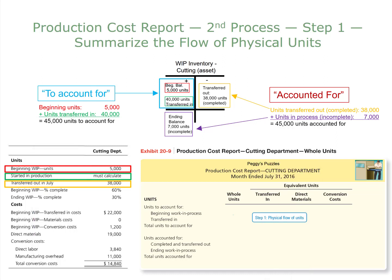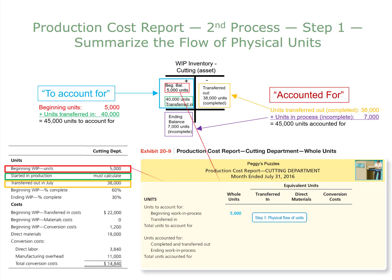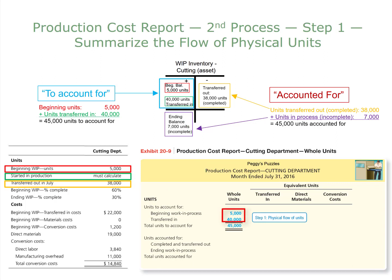Now we can fill out the first part of our production cost report, shown in the lower right corner of the screen. Notice this report is only for the cutting department. It shows the units we have to account for and units accounted for. We fill in the beginning work in process in whole units — 5,000 units — then the units transferred in during the period, which was 40,000, and then the total number of units to account for: 45,000.